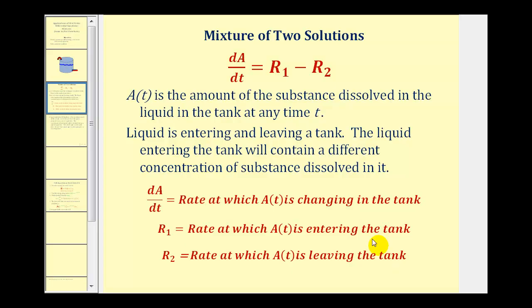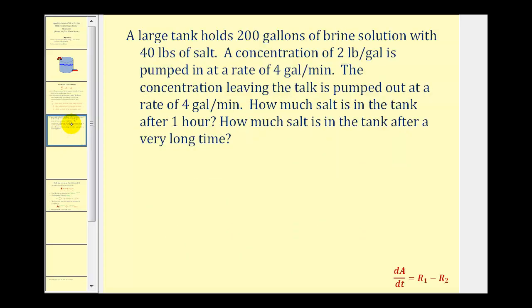Let's take a look at our example. A large tank holds 200 gallons of brine solution with 40 pounds of salt. A concentration of 2 pounds per gallon is pumped in at a rate of 4 gallons per minute. The concentration leaving the tank is also pumped out at a rate of 4 gallons per minute. How much salt is in the tank after one hour, and how much salt is in the tank after a very long time?